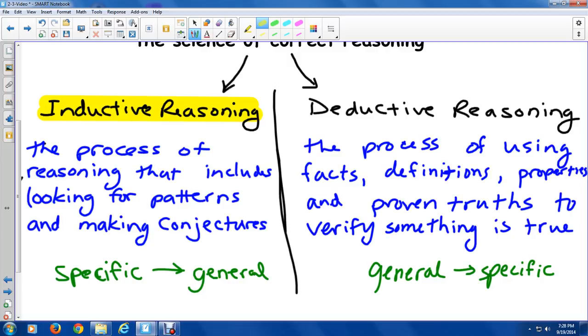Deductive reasoning is the complete opposite. You work from general rules, things you know to be true, and conclude that in specific examples it will also be true because it is a general rule. So we use facts, definitions, properties, and proven truths to verify that something is true. We will get into that much more in geometry as we get into the proof process.